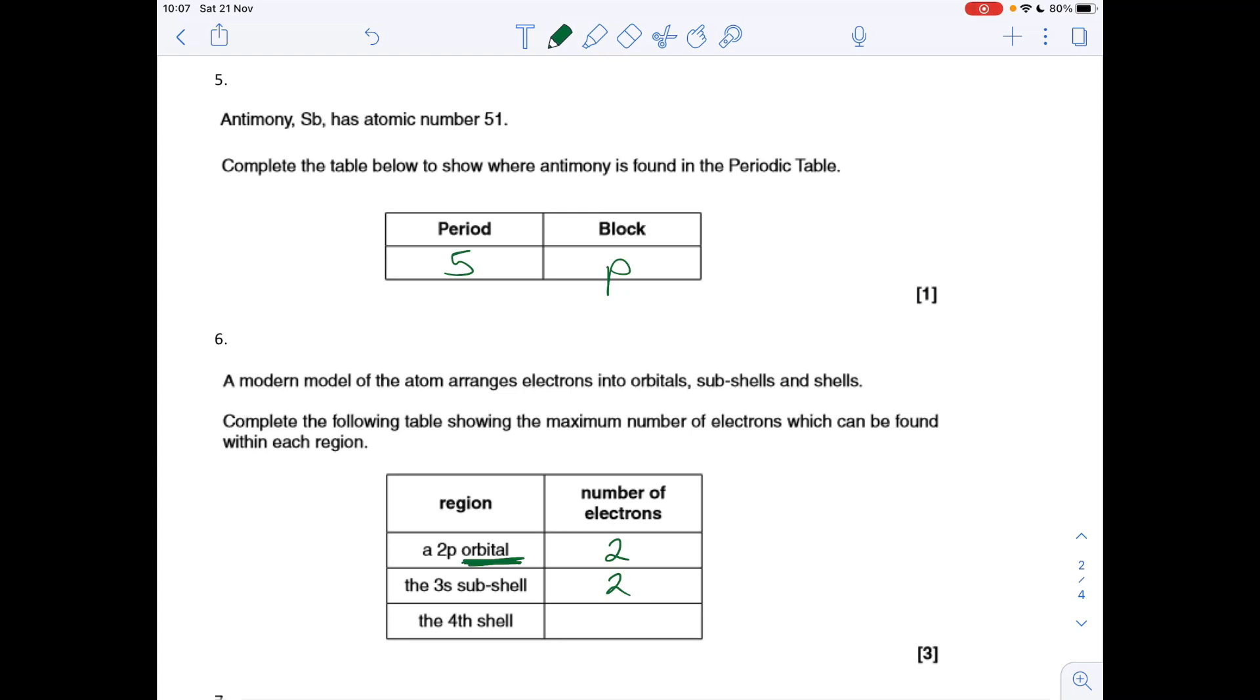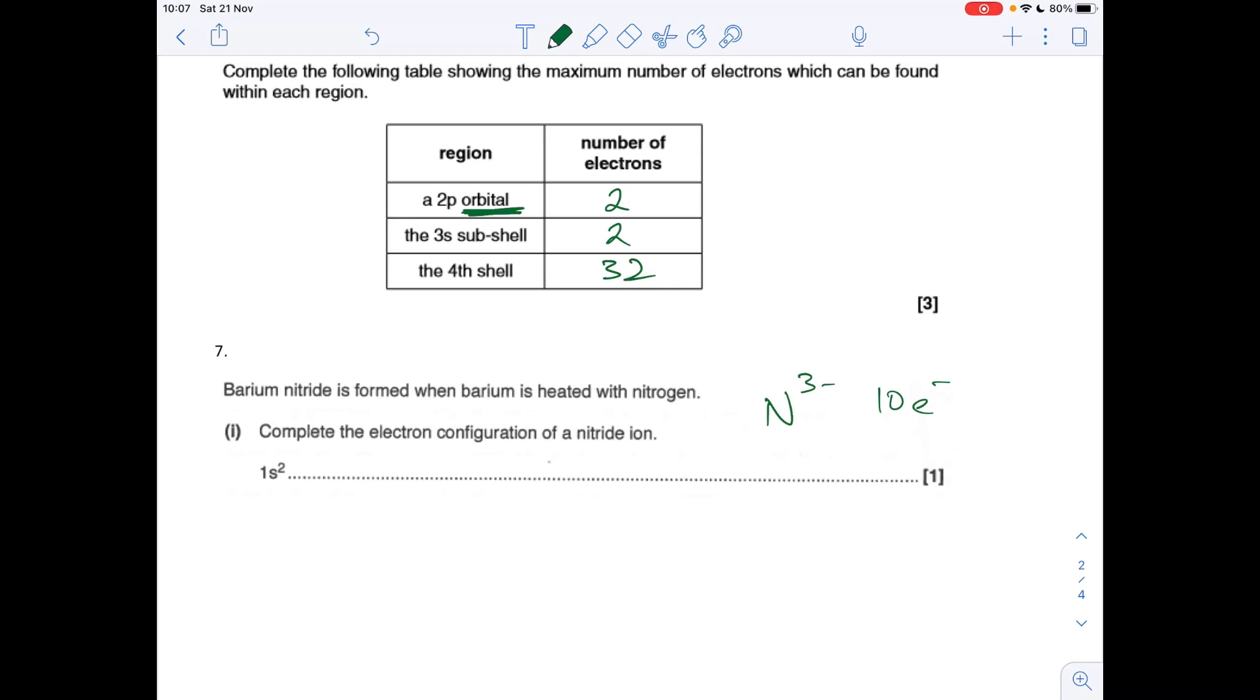Question seven: complete the electron configuration for the nitride ion. That's the N3- ion, so it's got 10 electrons. The atom of nitrogen's got seven electrons, so it's gained three electrons. It's going to be 1s2 2s2 2p6.